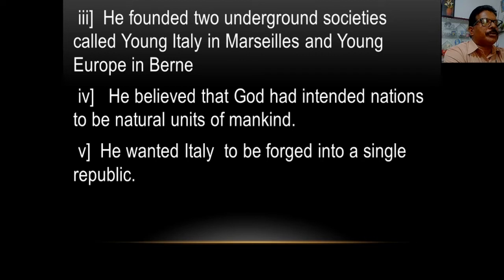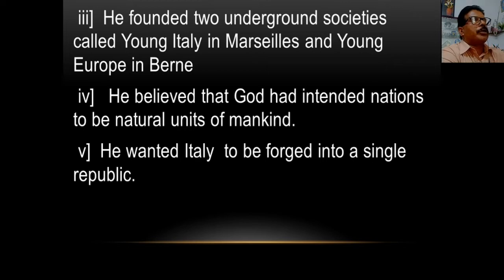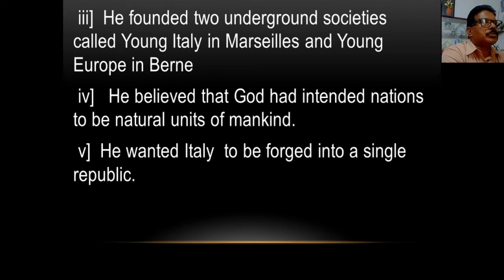We should know that Italy was divided into seven states, while Germany was divided into 39 states. So Giuseppe Mazzini wanted Italy to be united into a single republic — to become a nation state. That is why he formed these two underground societies, Young Italy and Young Europe, to spread his ideas.